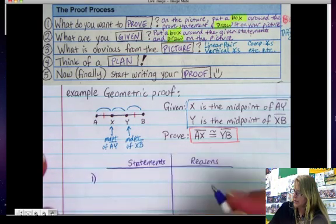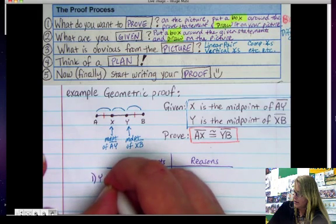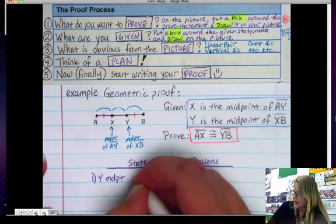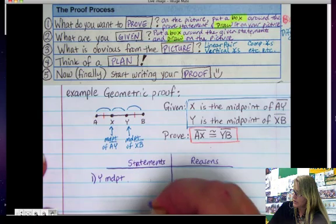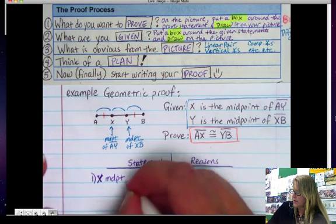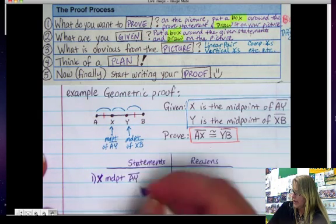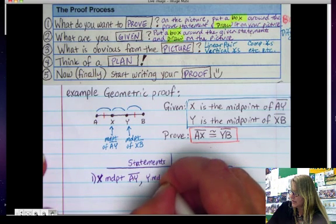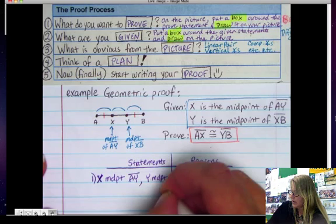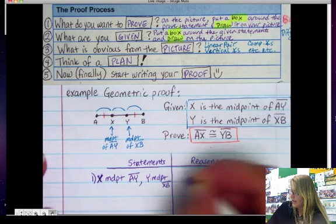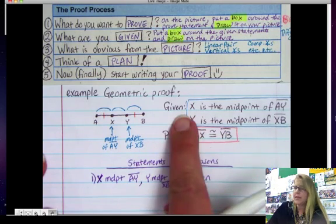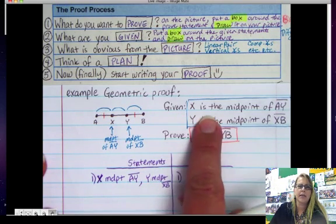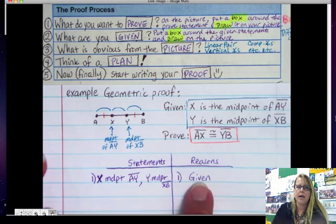So our first statement is going to be X midpoint of AY, and Y is midpoint of XB. And my reason is that it is given to me. It's part of the given statement. Anything that's part of the given statement is my reason.